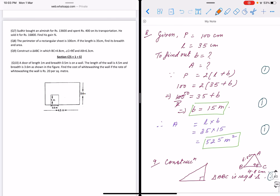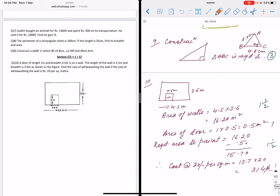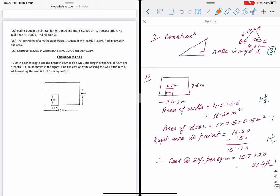Question number eight: Perimeter is given as 100 cm for a rectangle, length is 35 cm. We have to find breadth and area. P = 2(l + b). If we simplify, we get b = 15 cm. Area is length × breadth = 35 × 15 = 525 cm².